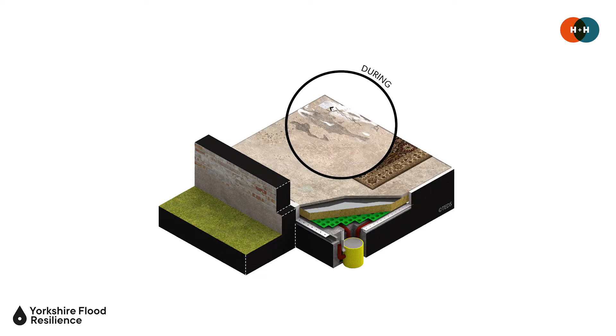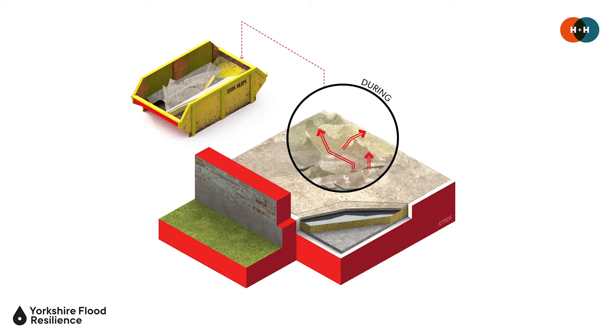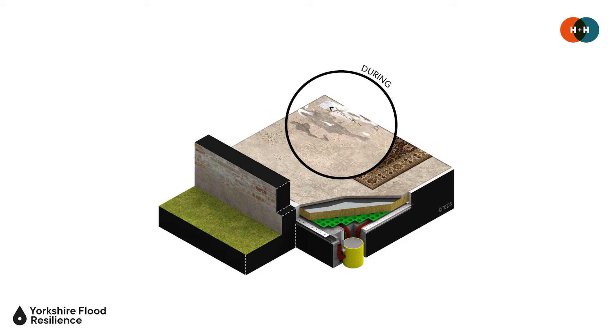Changing to a solid floor takes away that underfloor void and removes a potential route of flood water entry. With a solid concrete floor you need to consider how the floor screed, insulation and floor finishes can be made flood recoverable. You can specify flood resilient types of screed that dry quicker, and when it comes to insulation for parts of the building that could come into contact with flood water it can make sense to use closed cell insulation types, as these absorb less water and are easier to dry out.